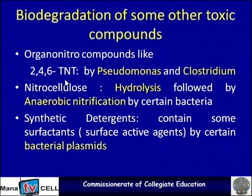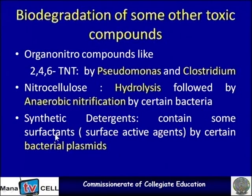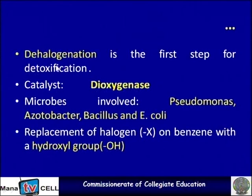Other toxic compounds include 2,4,6-TNT (trinitrotoluene), degraded by Pseudomonas and Clostridium. Nitrocellulose undergoes hydrolysis followed by anaerobic nitrification by certain bacteria. Synthetic detergents or surfactants are degraded by certain bacterial plasmids. Dehalogenation is the first step for detoxification; the catalyst employed is dioxygenase, and the microbes involved are Pseudomonas, Acetobacter, Bacillus, and E. coli.